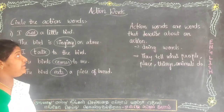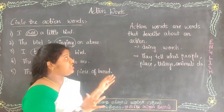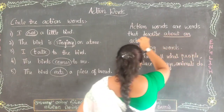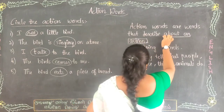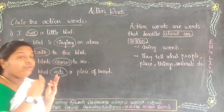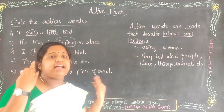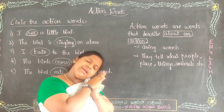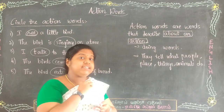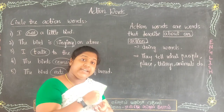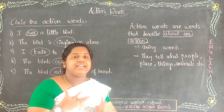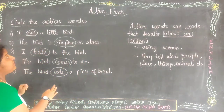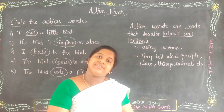For the students, let me summarize these examples. What is an action word? An action word is a word that describes an action. For example: I am sleeping, I am eating, I am reading, I am writing — these are all action words, also known as doing words. Have you understood all these action words? See you in the next video. Thank you.